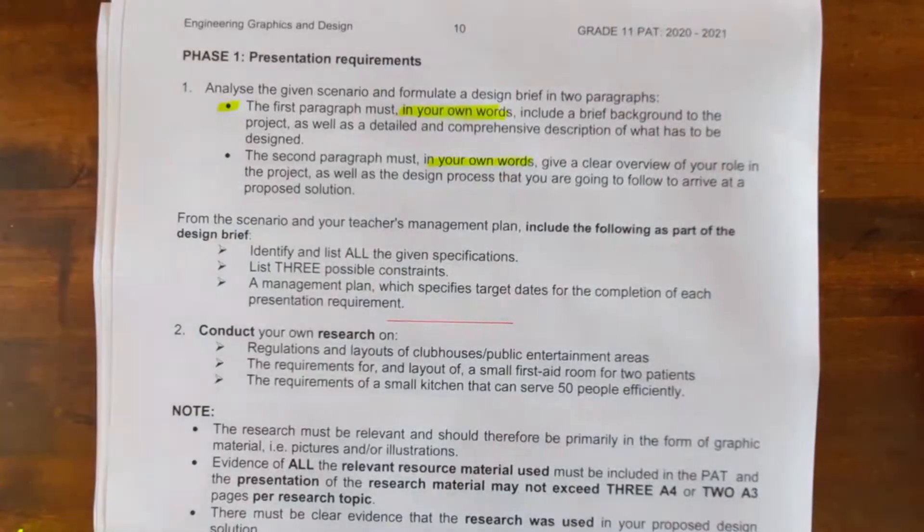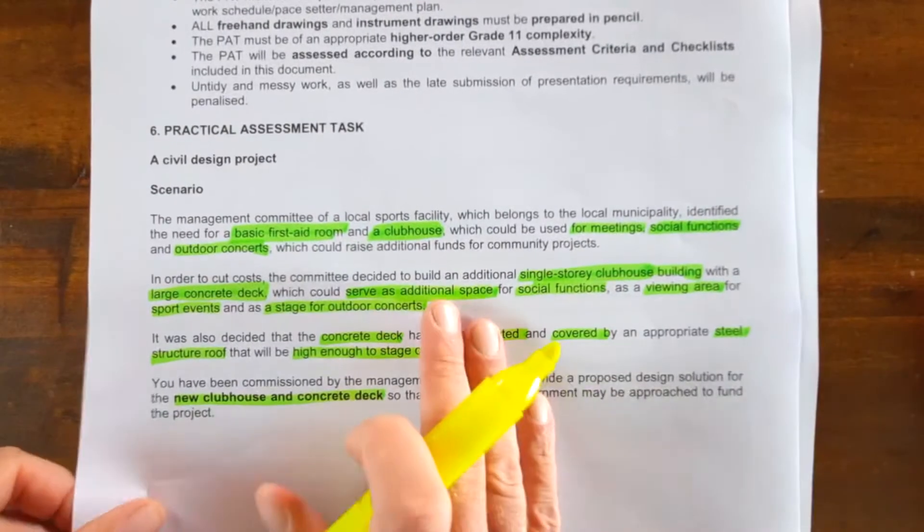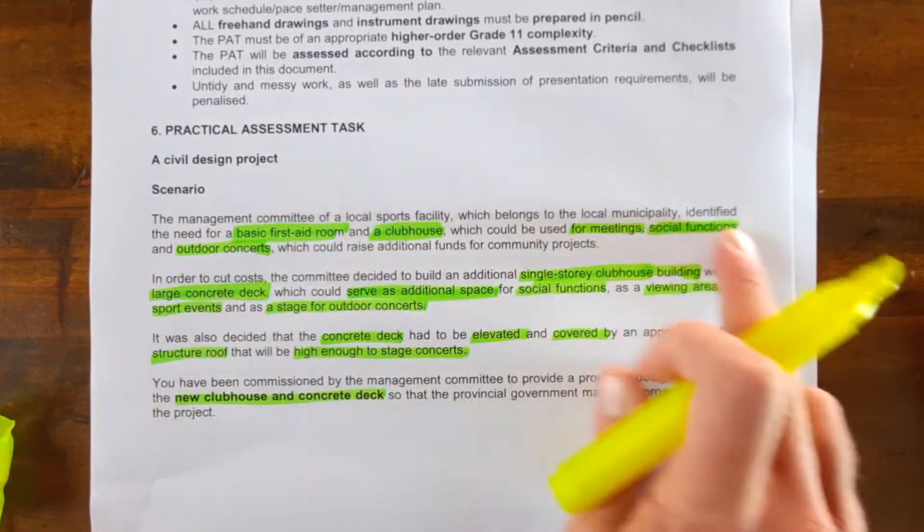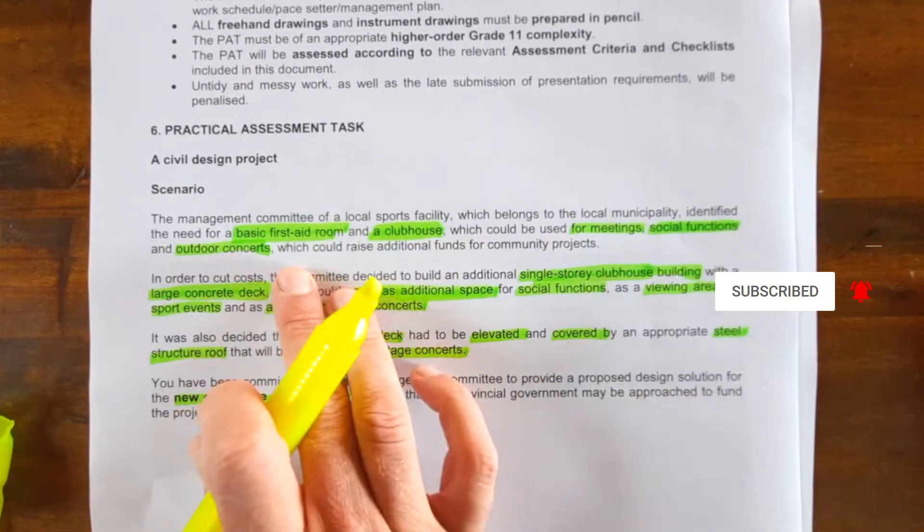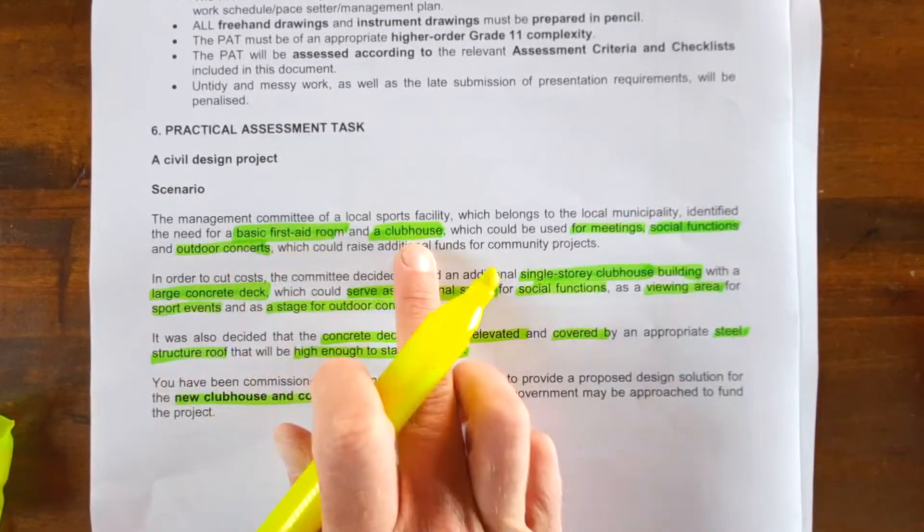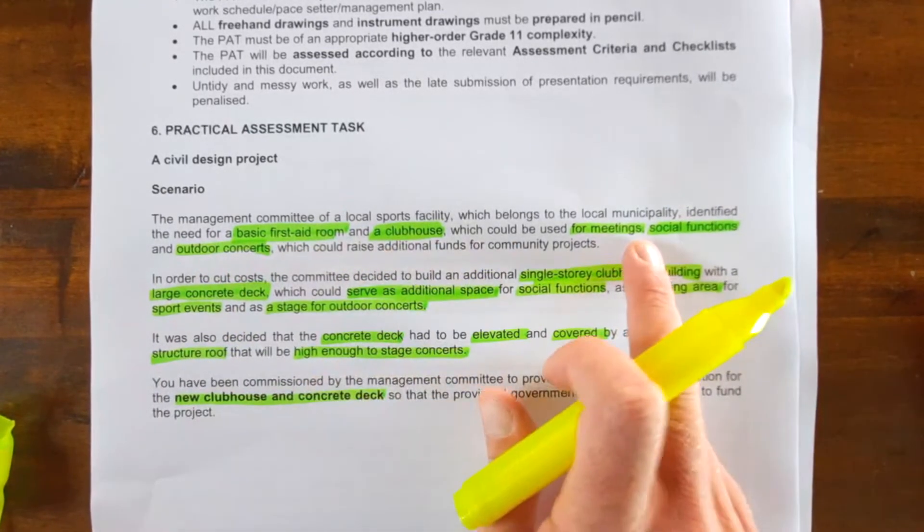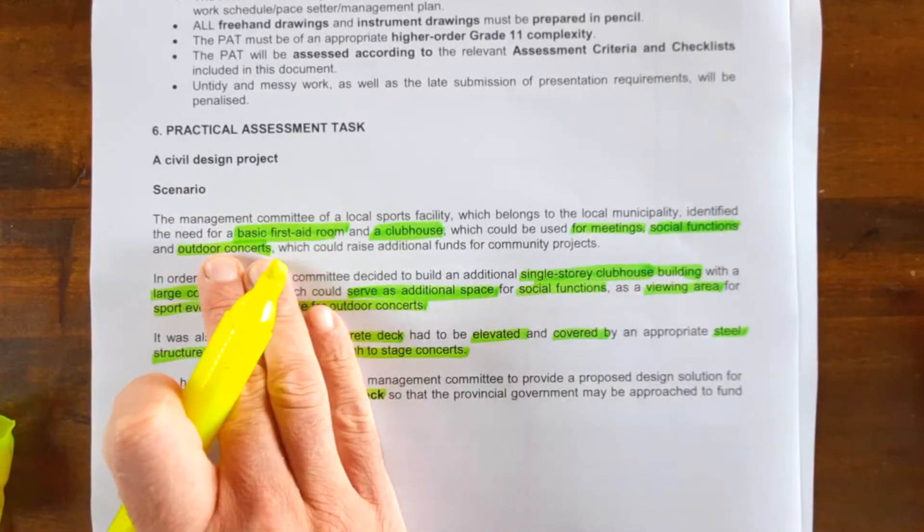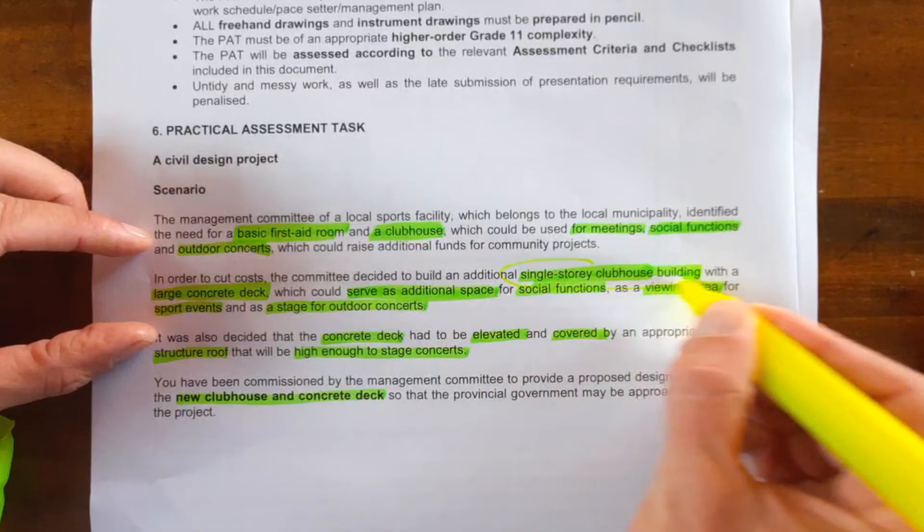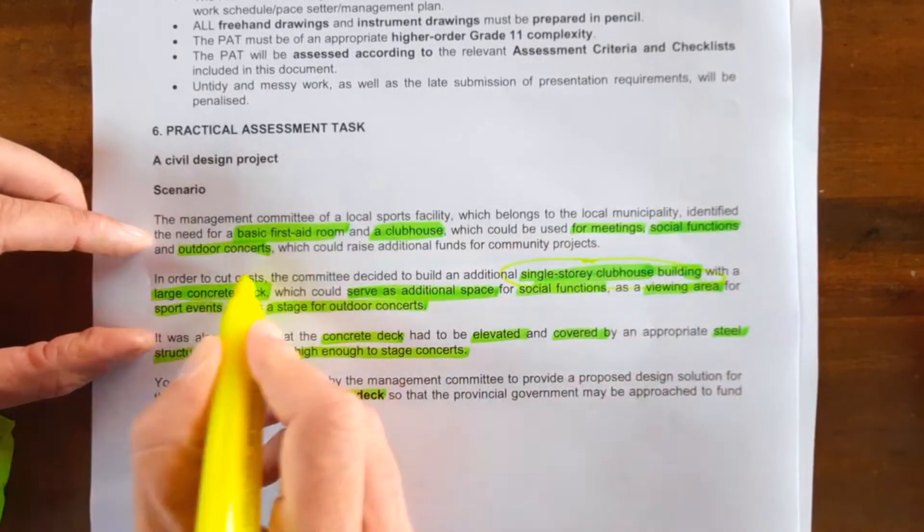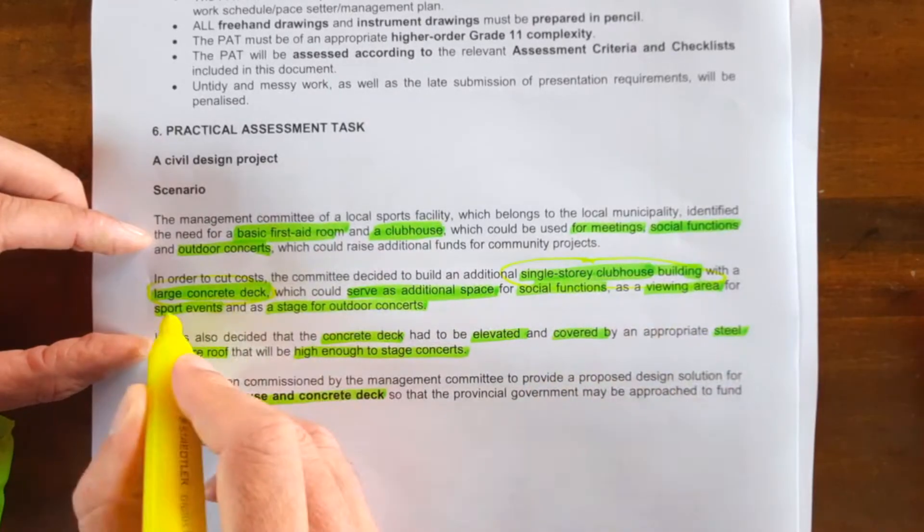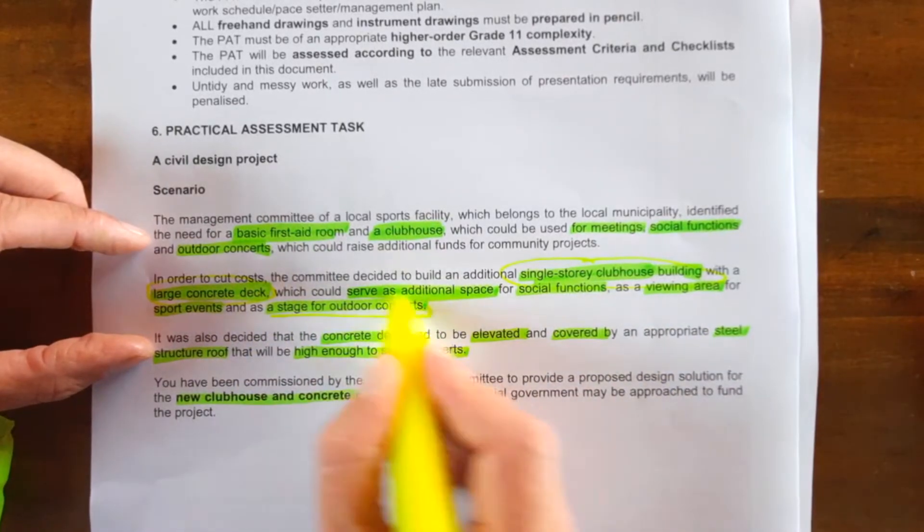Now if you remember correctly, the actual document which I talked through in episode one, we highlighted a couple of parts that are very important. In this PAT you are going to design a basic first aid room and a clubhouse for meeting social functions and outdoor concerts. It must be a single-story clubhouse building with a large concrete deck that serves additional space for social functions, viewing area, and a stage for outdoor concerts.